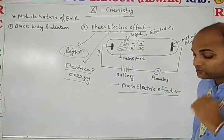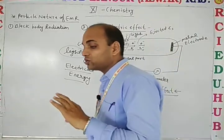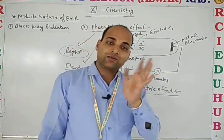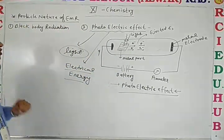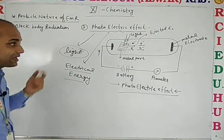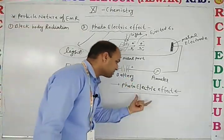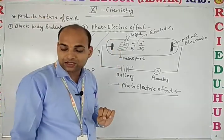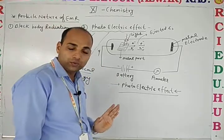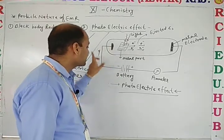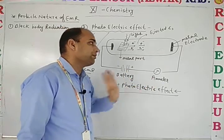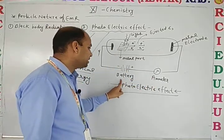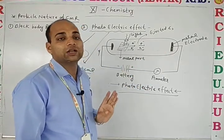We can explain it another way. There is a phenomenon of energy conversion: photo energy, that is light energy, is converted into electrical energy. To understand this, you have to see the structure — an evacuated tube. This tube is connected with a voltmeter and ammeter with the help of a metallic output.